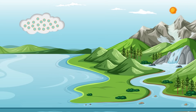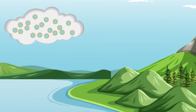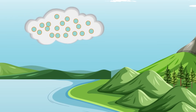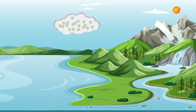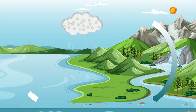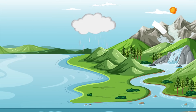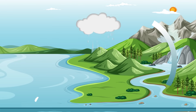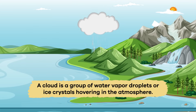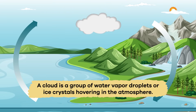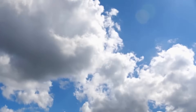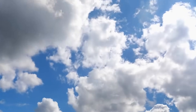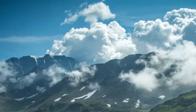When the water vapor rises, it comes into contact with cooler, thinner air. As the warm air and water vapor cool, clouds are formed. All of that is a long way of saying that a cloud is a group of water vapor droplets or ice crystals hovering in the atmosphere. Pretty cool, right?